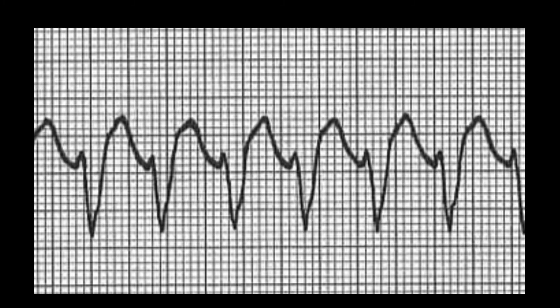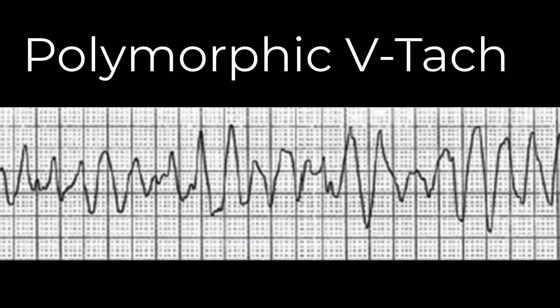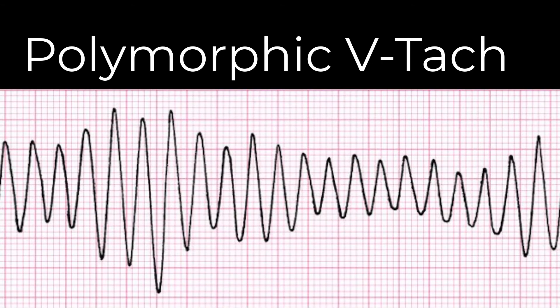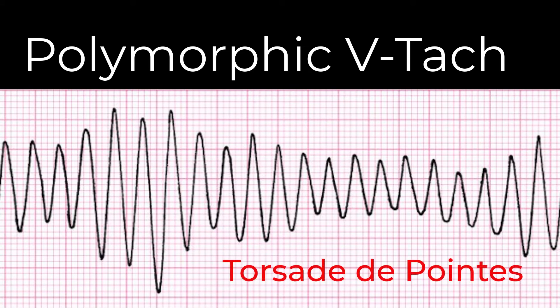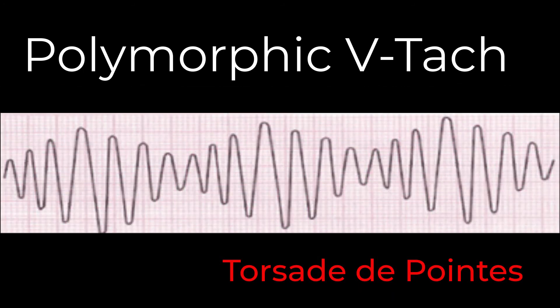It is also common to note that the T-wave extends dramatically in the opposite direction from the QRS. In polymorphic VTAC, the origin of the rhythm is coming from more than one site in the ventricles. In this case, the rhythm may be irregular and the QRS complexes may vary in appearance. One specific type of polymorphic VTAC is known as torsades de pointes, or simply torsades. In this rhythm, you will see an unmistakable pattern of the QRS amplitude increasing and decreasing across the ECG tracing.